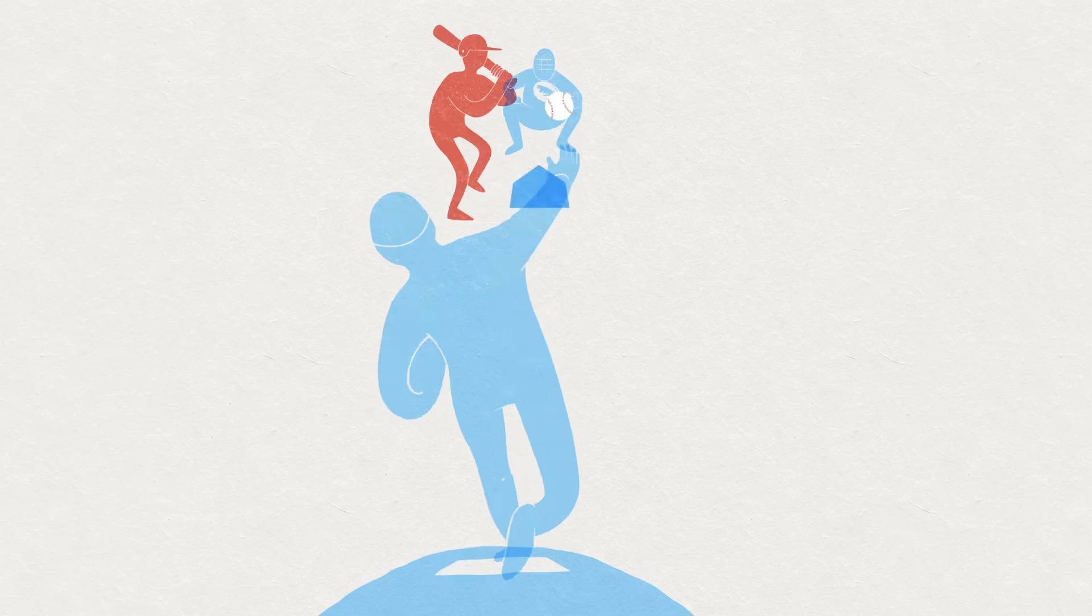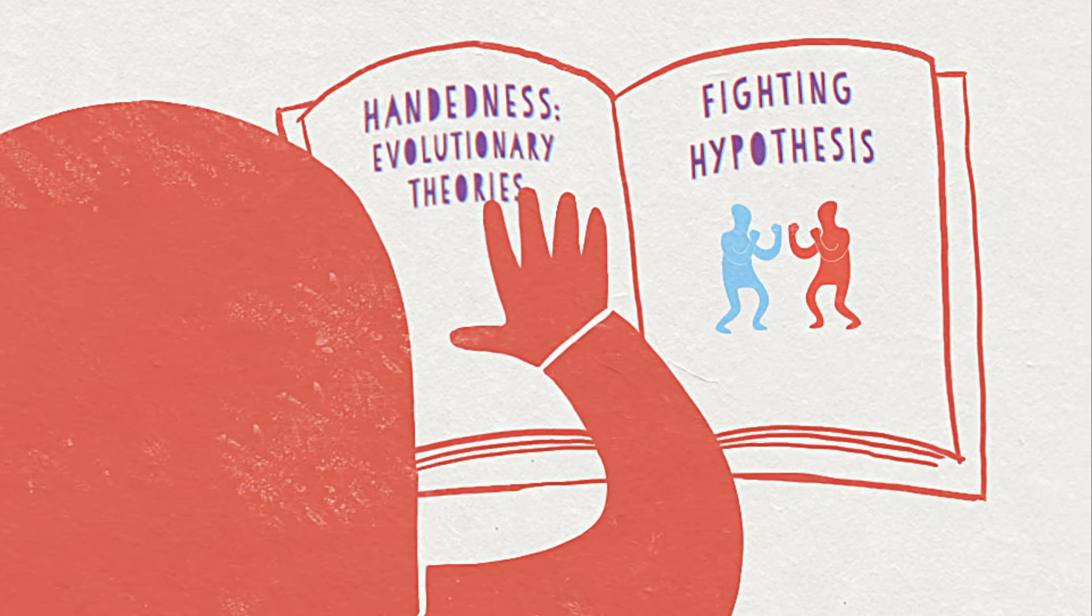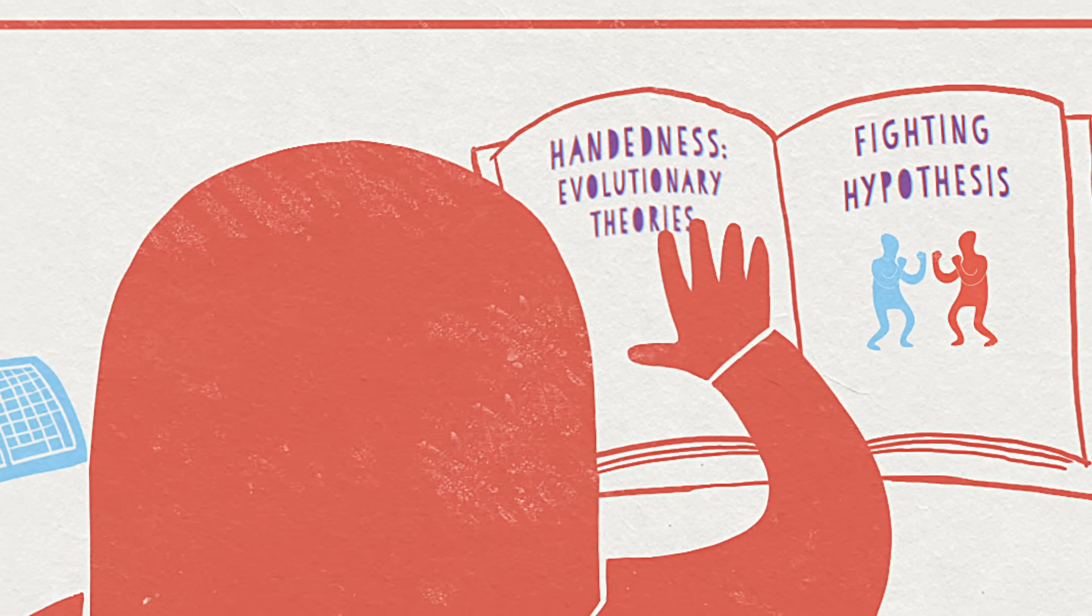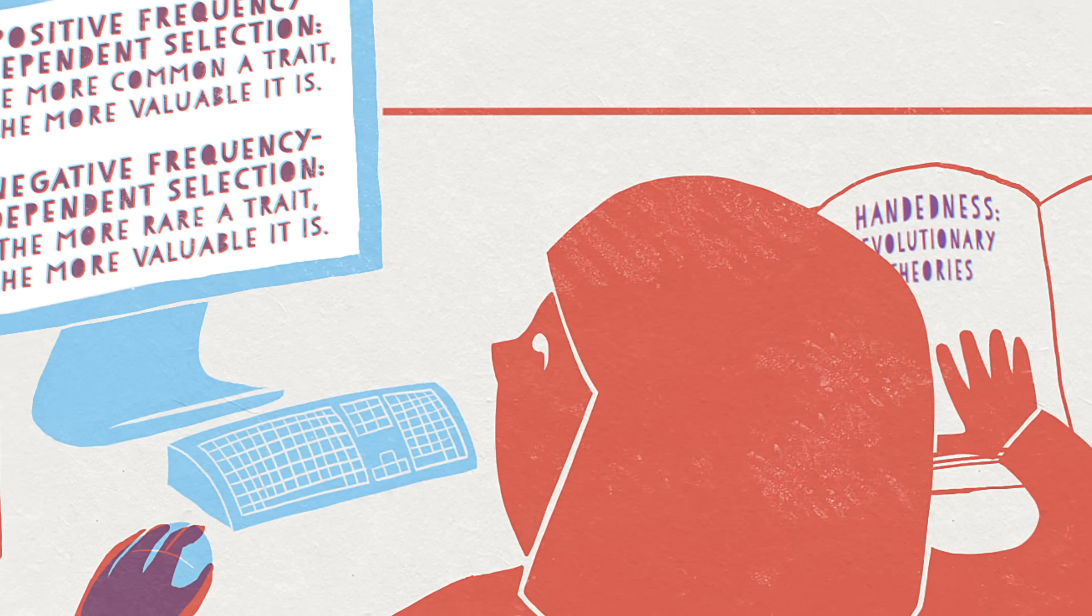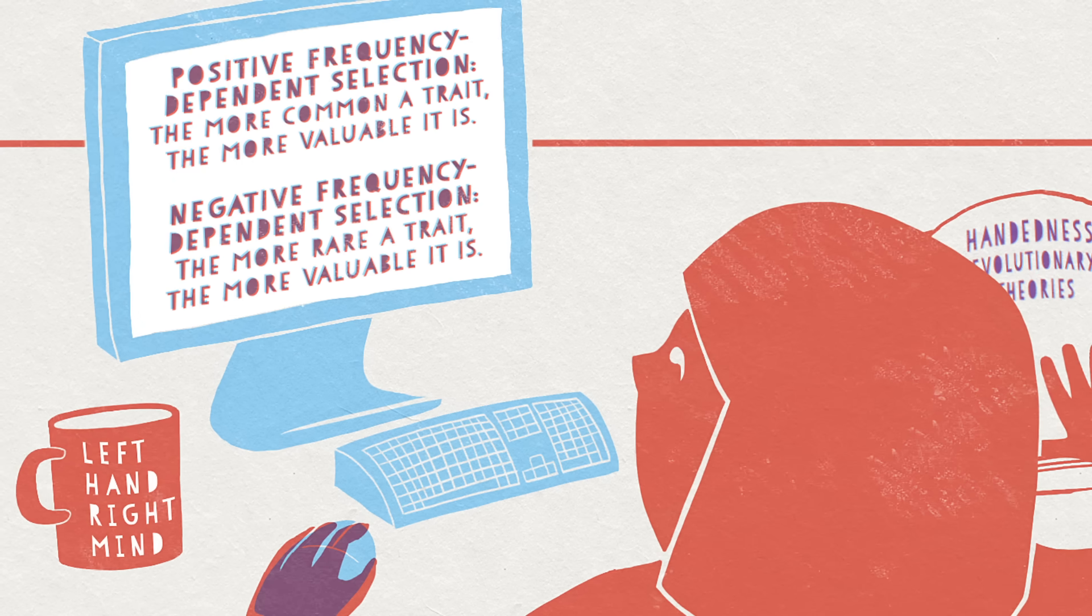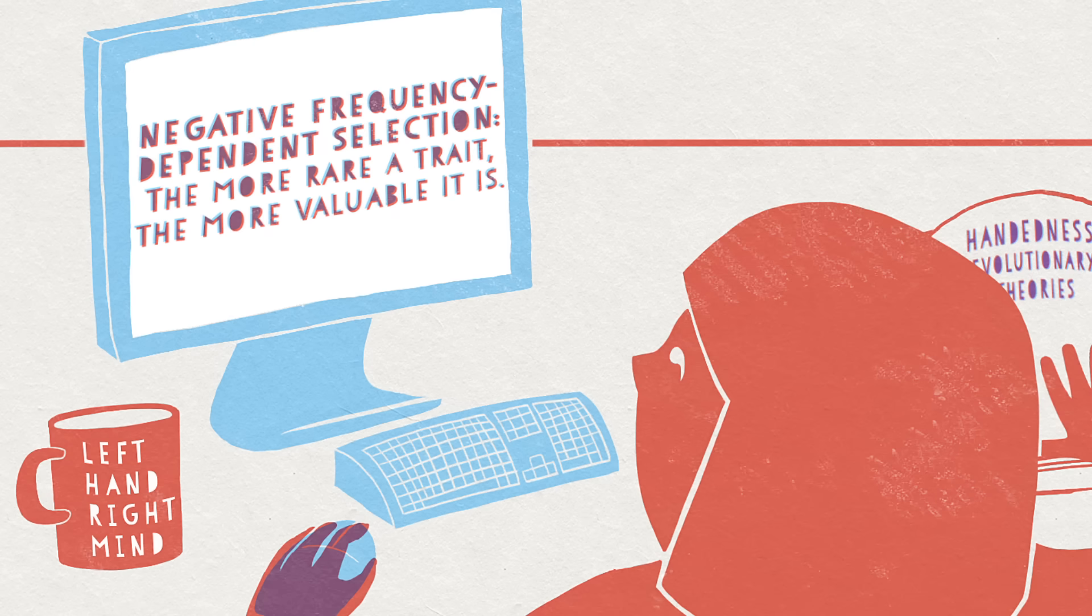This fighting hypothesis, where an imbalance in the population results in an advantage for left-handed fighters or athletes, is an example of negative frequency-dependent selection.